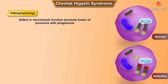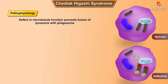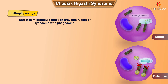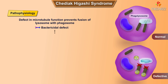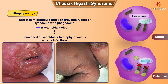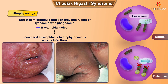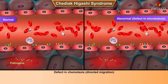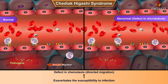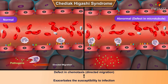In addition, there is a defect in microtubule function in neutrophils and monocytes that prevents the fusion of lysosomes with phagosomes to produce phagolysosomes. This produces a bactericidal defect with increased susceptibility to Staphylococcus aureus infections. Microtubule dysfunction also produces defects in chemotaxis, which is known as directed migration, further exacerbating susceptibility to infection.